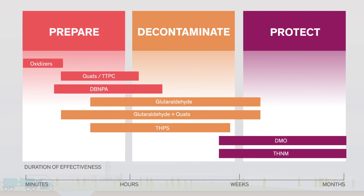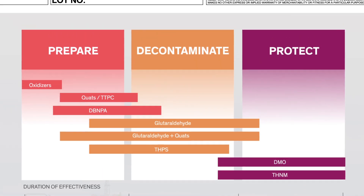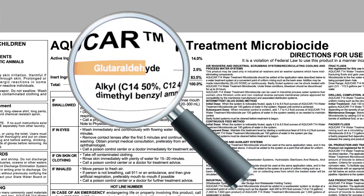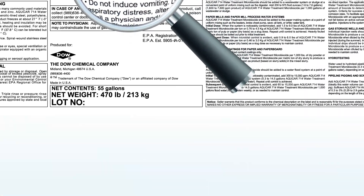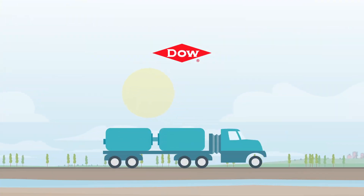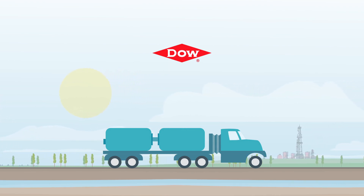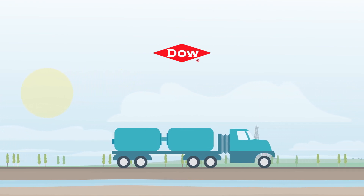Glutaraldehyde is commonly used in combination with QUADS to leverage their quick action topside before decontaminating the well. We hope this overview gives you a good idea of which biocide might be the most effective for your operation. If you're not sure of what biocide you are using, check the label of the product you use — the active ingredient will be listed there. If you want to learn more about the strengths and weaknesses of commonly used biocides in oil and gas operations, check out our overview.